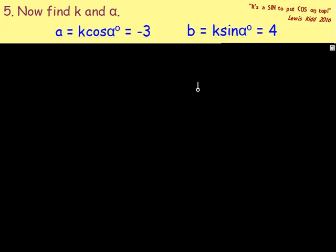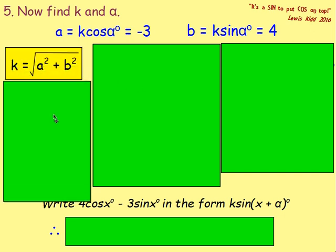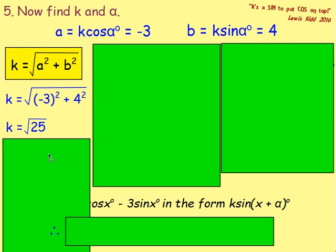After that, we find the values of k and α. So a equals k cos α and b equals k sin α, and we use the formulas from last lesson. To find k, that is the square root of a squared plus b squared. So we have the square root of negative 3 squared plus 4 squared, which is the square root of 9 plus 16, which is the square root of 25, which is 5.